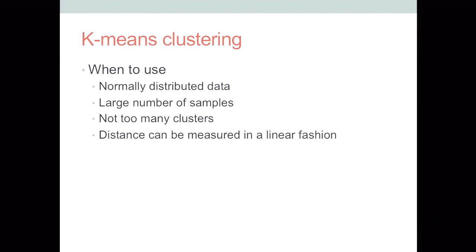So k-means clustering is good for normally distributed data. Non-normally distributed data can really skew the results because we're using a Euclidean distance metric. And you also want to use it when you have a large number of samples and also not too many clusters, which sort of is to your own interpretation what too many clusters is. But generally works better for fewer numbers of clusters. And it's also good for when your data can be measured in a linear fashion. Data that can't be separated in a linear fashion may require another method like a kernel trick.